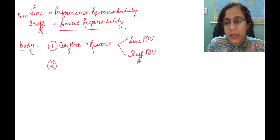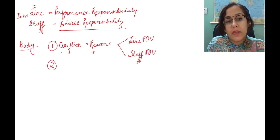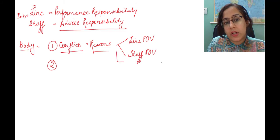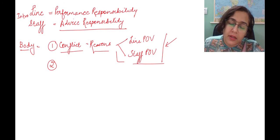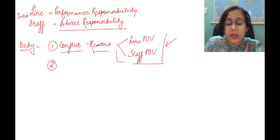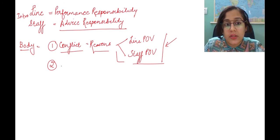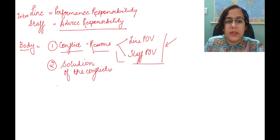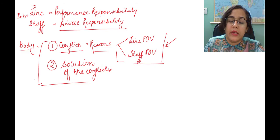Next, once we have enumerated the conflicts, this will take up the major chunk of the answer because this is what is asked. Then the second thing that has to be covered is how to actually solve this conflict. So the solution has to be covered in the next point. These two things will make up our body part of the answer.